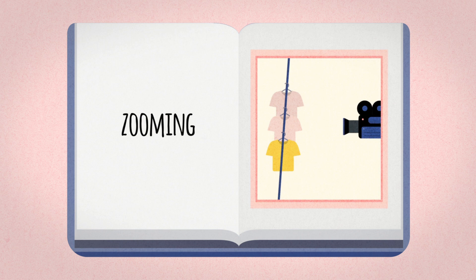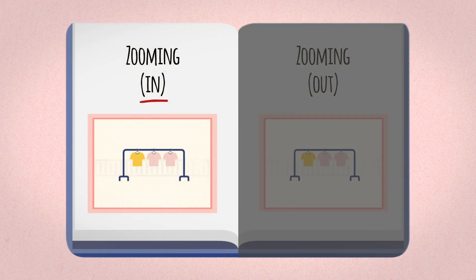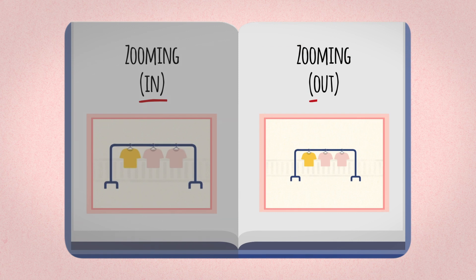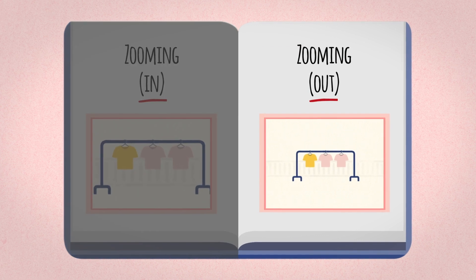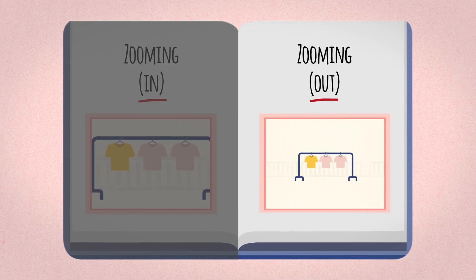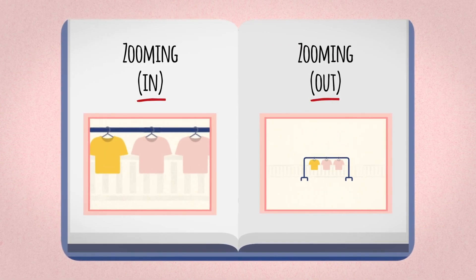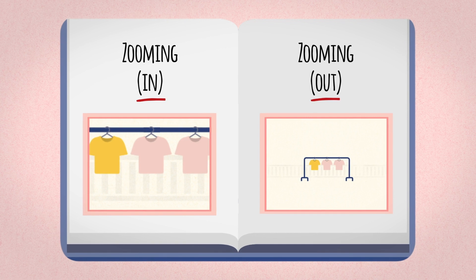Zooming means changing the focal length of the lens. It gives the illusion of moving closer to or away from the object, and magnifies the details or extends the field of view respectively.